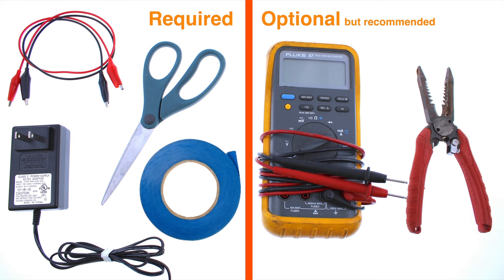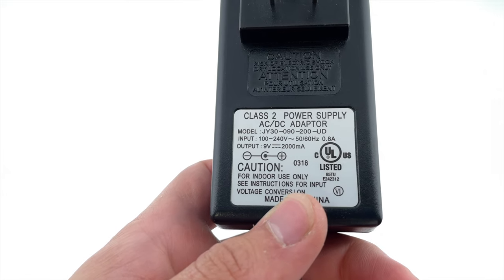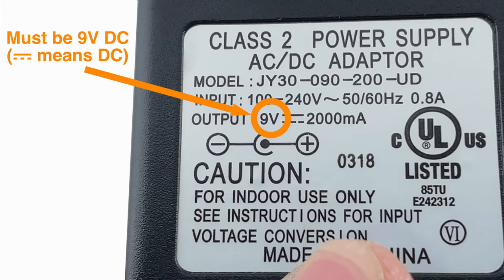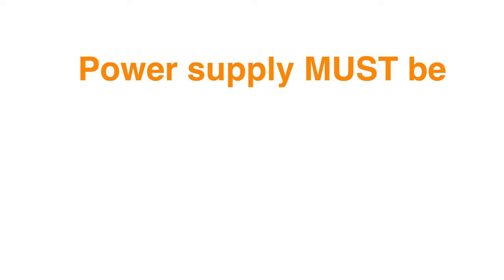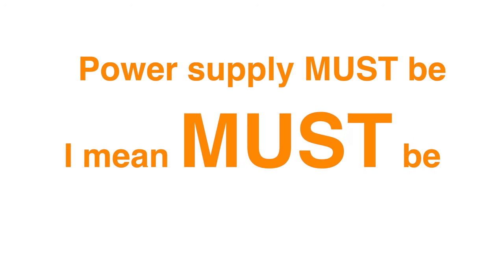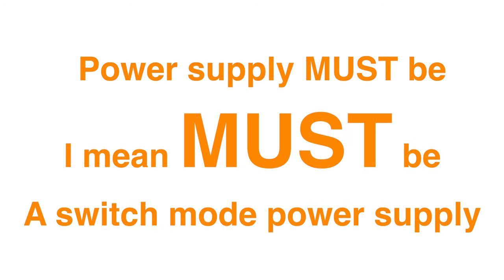Especially the multimeter. So about the power supply, it obviously needs to be 9 volts and capable of supplying at least 2 amps of current, and sometimes it's written in milliamps, so it would be 2,000 milliamps. It also must be, and I mean must be, a switching power supply, not a linear power supply with a big heavy transformer in it.